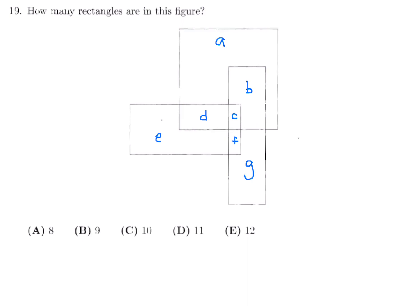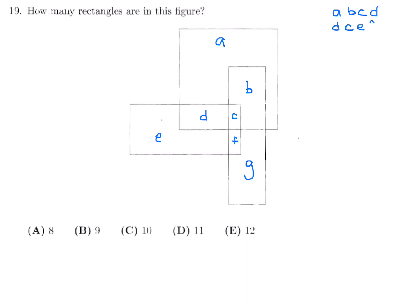The three largest rectangles are ABCD, DCEF, and BCFG. Then individual cells D, C, and F are rectangles, as are combined pairs D+C and C+F. That gives 8 so far.